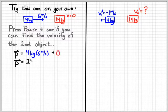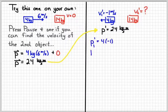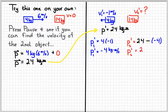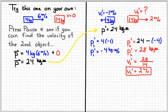So my solution would look something like this. First, find the momentum of the system, which is 24 kilogram meters per second. Since it's a collision, momentum is conserved, so the momentum after is also 24 kilogram meters per second. The momentum of the first object after the collision is negative four kilogram meters per second. Subtracting that from 24 gives the momentum of the second object, which is 28 kilogram meters per second. Dividing by its mass gives a velocity of two meters per second to the right.